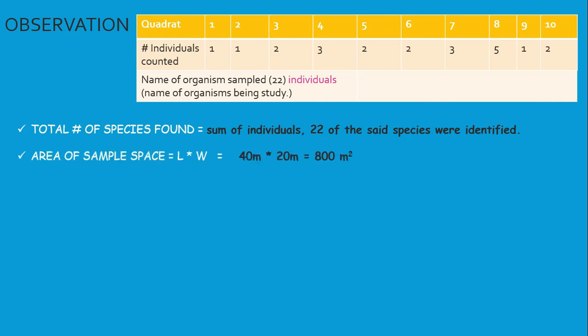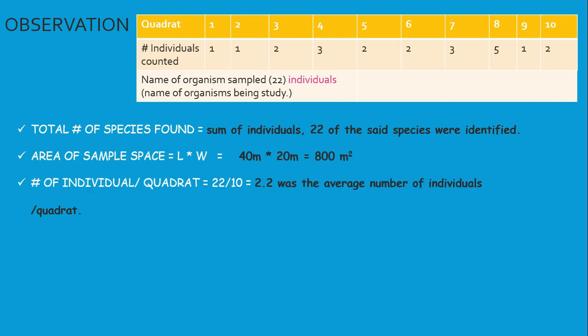Area sampled: 800 meters square. The mean number of individuals per quadrat equals 2.2. We arrived at that answer by dividing the number of individuals by the number of quadrats, which gave us a mean of 2.2 individuals per quadrat.